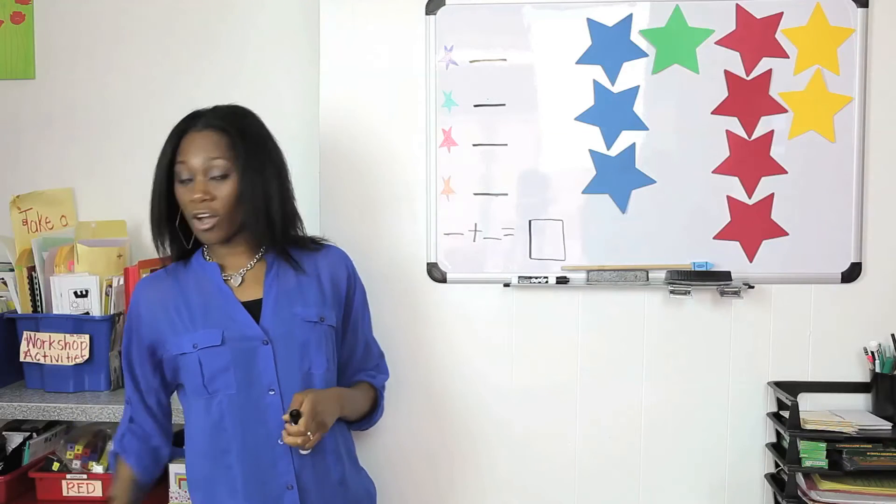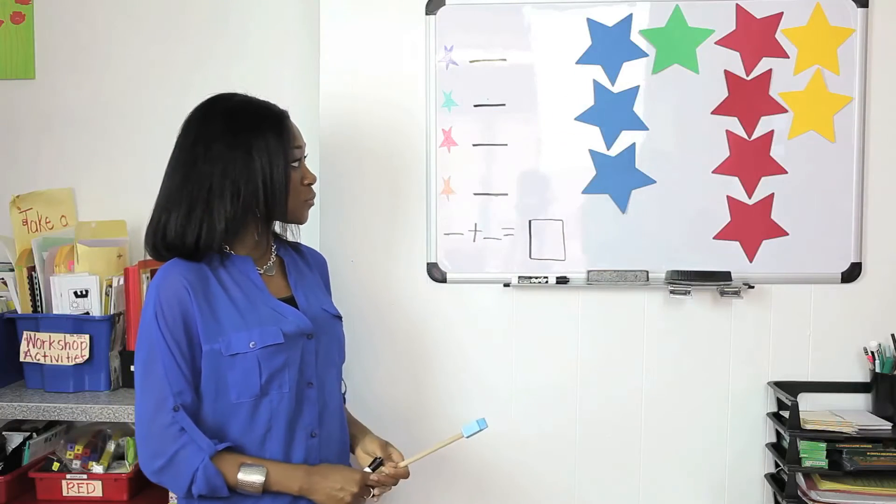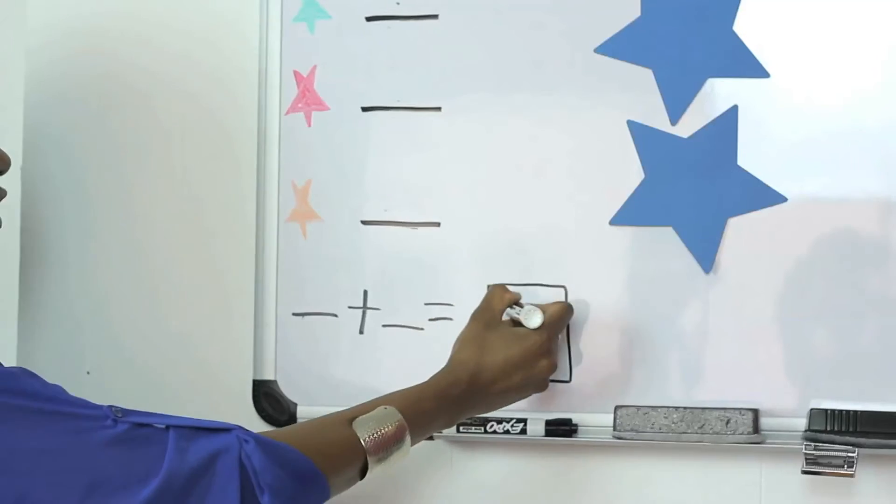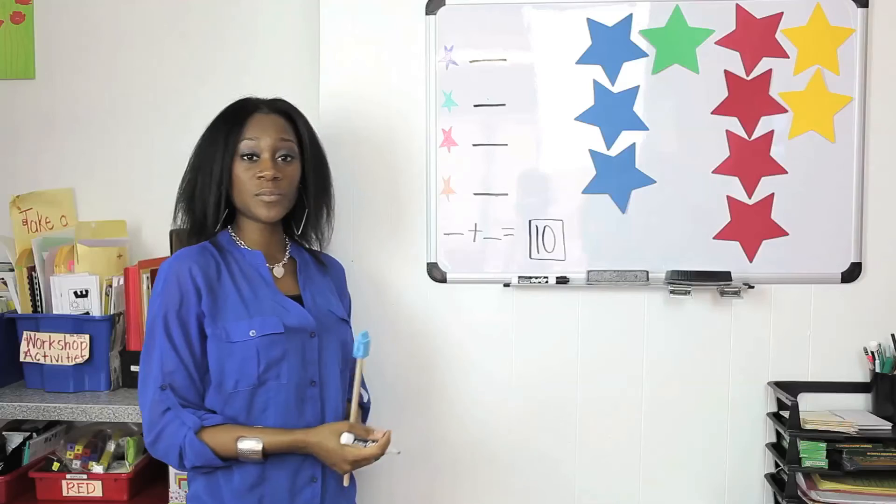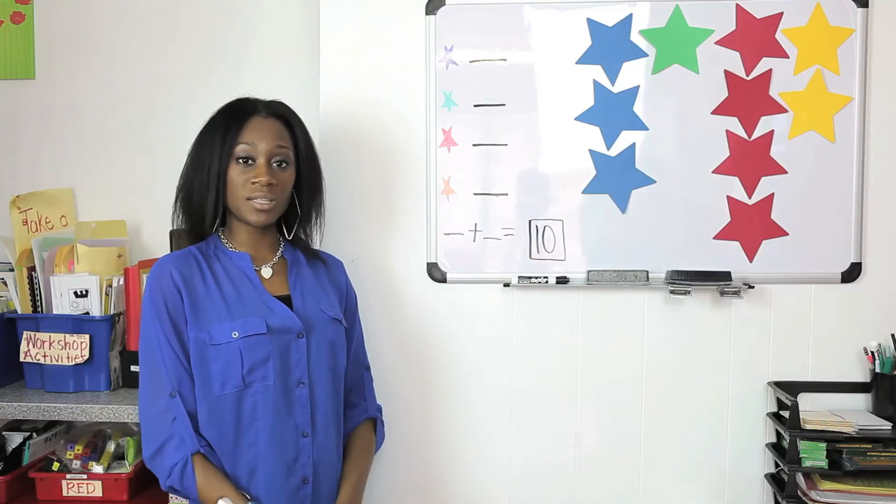As you see here on my whiteboard, I have an array of colored stars. Now you're going to ask the students how many stars do they see? They should tell you ten stars. Explain to the students that the number ten will always be the denominator.